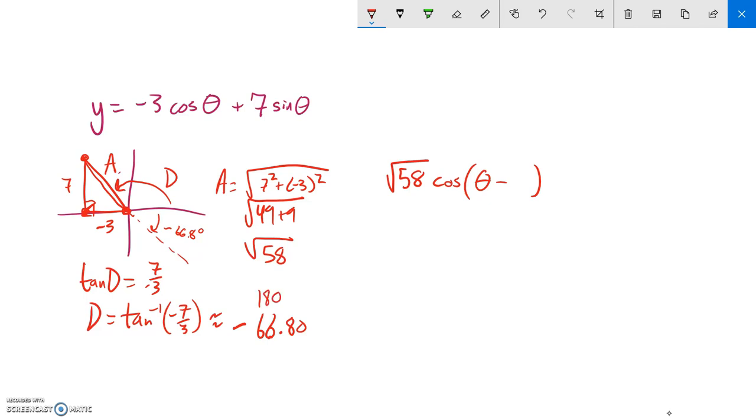So I'm going to add 180 to that. And I get about 113.199 degrees. So 113.199 degrees. Like I said, that's in degrees. If you did it in radians, that is perfectly fine as well. This would be that.